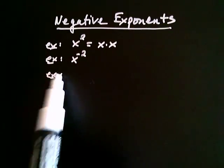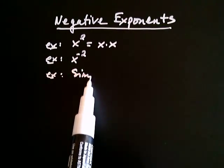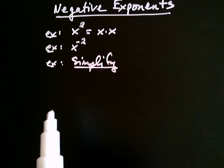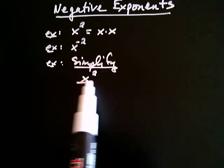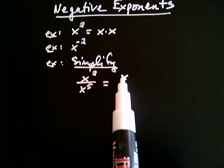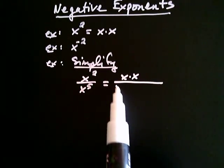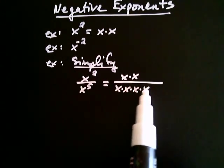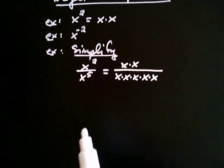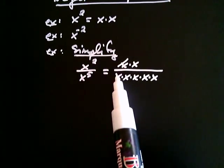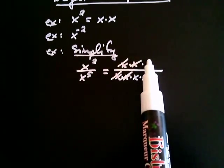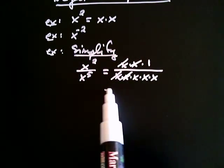Consider the following situation. Let's say that you wanted to simplify x squared divided by x to the fifth. Well, x squared is x times x, and x to the fifth is x times x times x times x times x — five factors of x. Because you're dealing with factors, we can cancel one factor in the numerator with one factor in the denominator. We cancel and cancel again. In the numerator we're left with a one, and so we get one over x to the third.